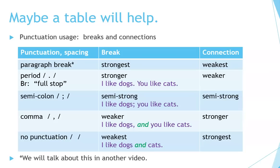The next one is a period — in British English, they sometimes say 'full stop.' For example: I like dogs. You like cats. This shows a weaker connection between ideas.